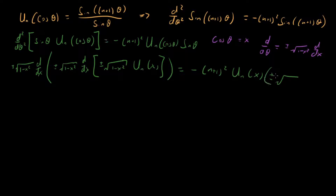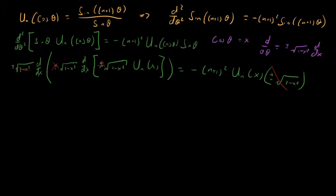We have this sine theta written as plus-or-minus root one-minus-x-squared four times: here, here, here, and here. Two of these cancel, and the other two plus-or-minuses get squared to one. So we can cancel two of them and the remaining pair squares to plus one — that makes things much easier.